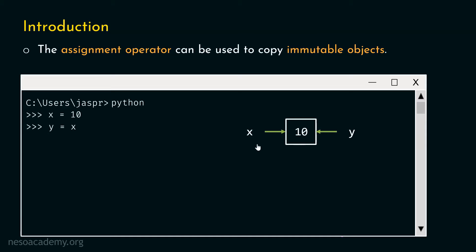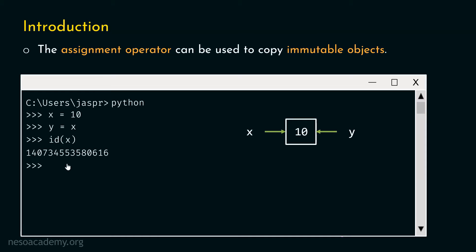Let's check the id of x and the id of y. If these two variables are pointing to the same object, their ids must also be the same. We will type id(x) and hit enter — we get this id. Now let's type id(y) and hit enter — we get the same id. These two ids are exactly the same, which means x and y are pointing to the same object.